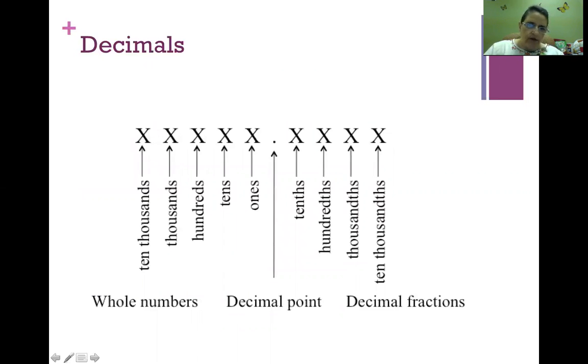When we talk about decimals, we have whole numbers to the left of the decimal point and fractions to the right. Whole numbers begin with ones, go to tens, hundreds, thousands, and ten thousands. Going to the right in partial numbers, we have tenths, hundredths, thousandths, and ten thousandths.